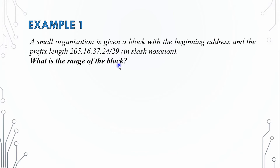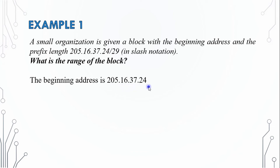This is the range of the block. The beginning address is 205.16.37.24, and the prefix length is 29. So, how many bits are used for the network? We have 8 bits for each of the first three octets, giving us 24 bits total. The remaining 5 bits from the prefix give us 29 network bits.